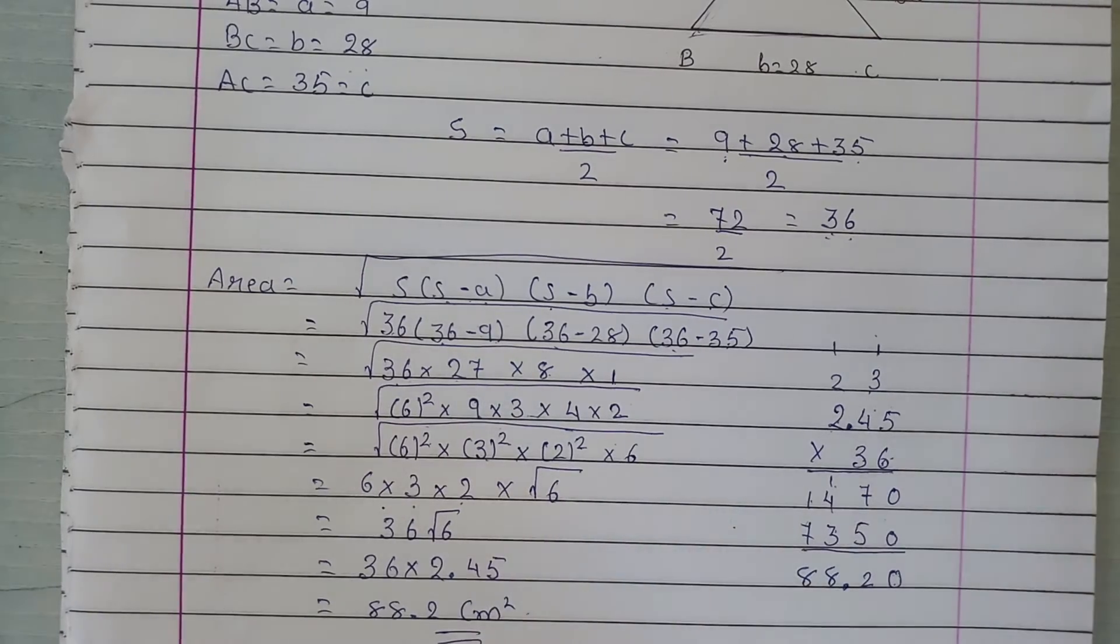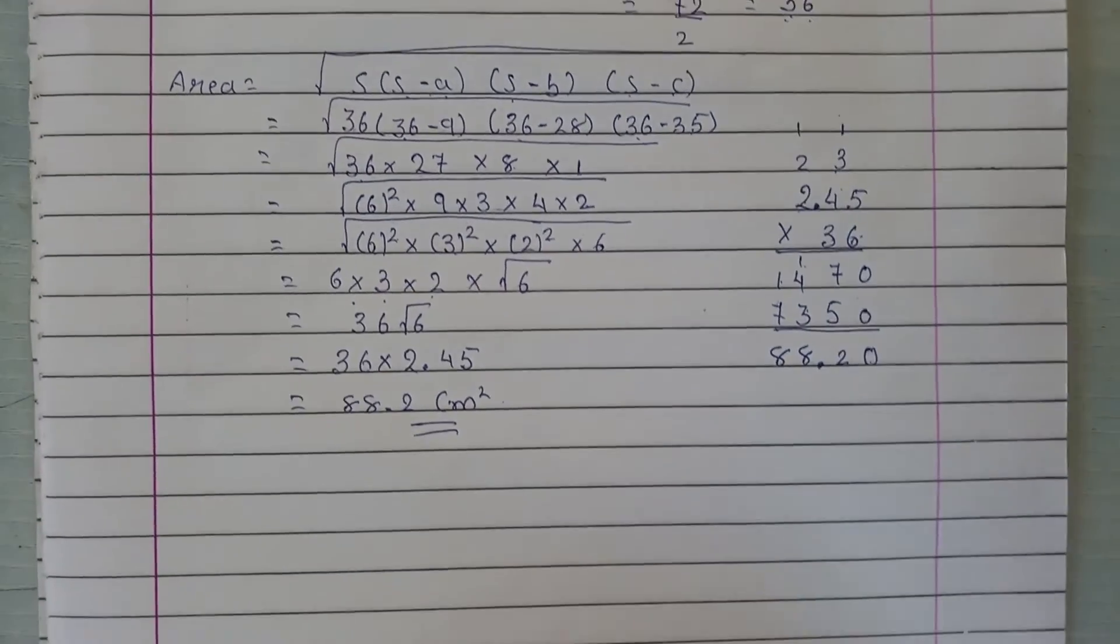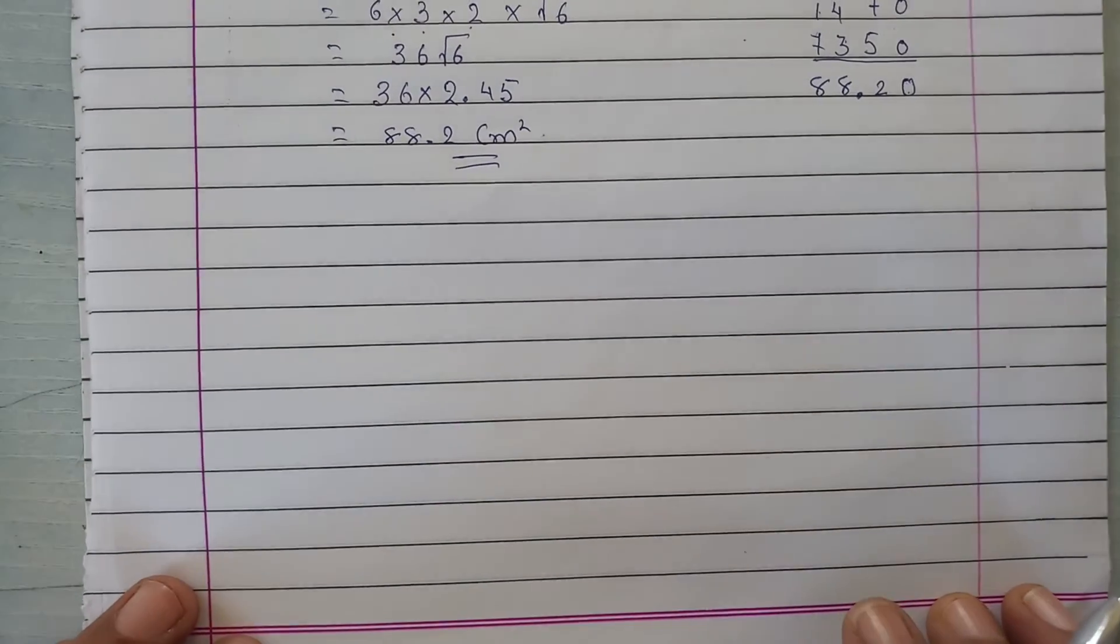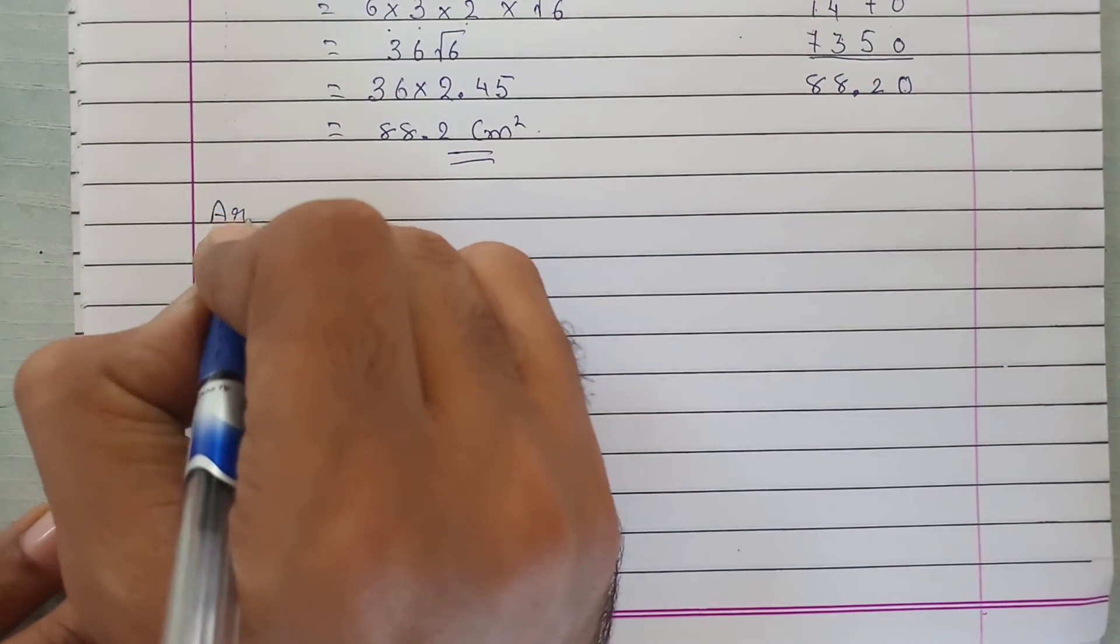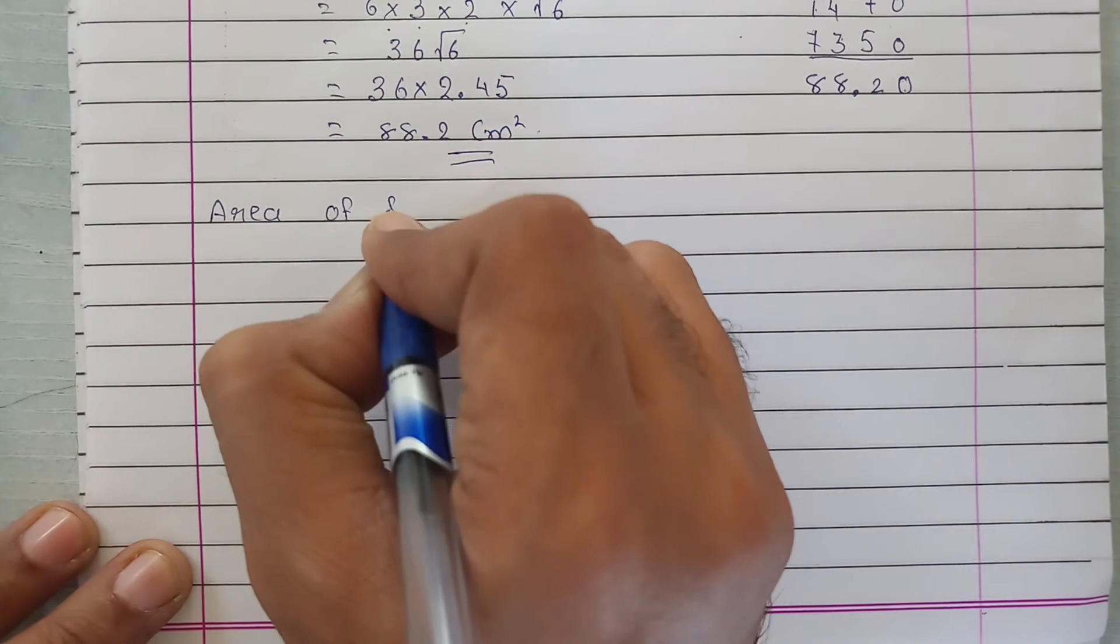This is the area of one triangle. Now we need the area of 16 such triangles. So area of floral design will be 16 times 88.2 cm squared.